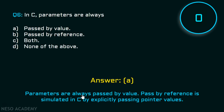Parameters are always passed by value. Pass by reference is simulated in C by explicitly passing pointer values.